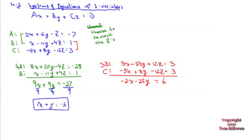Adding those gives negative 2x minus 25y equals 6. That one's not so nice — you can't divide anything out — but now we're down to two equations with two unknowns.